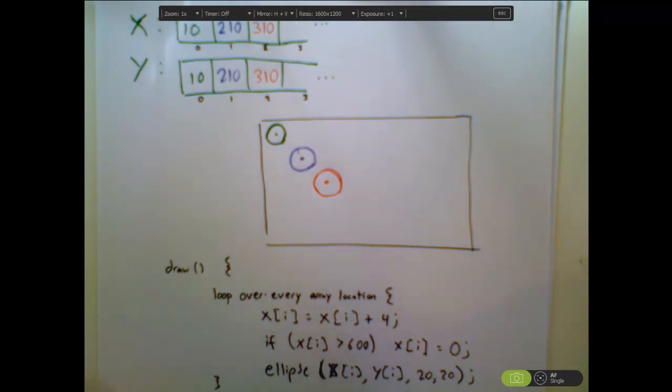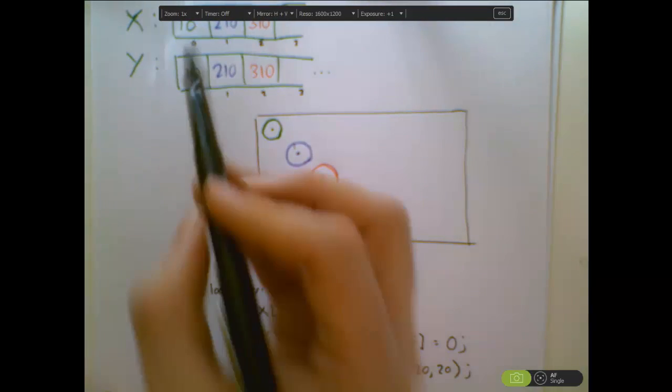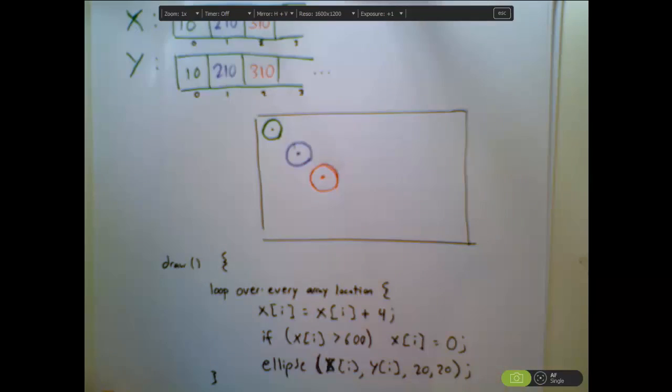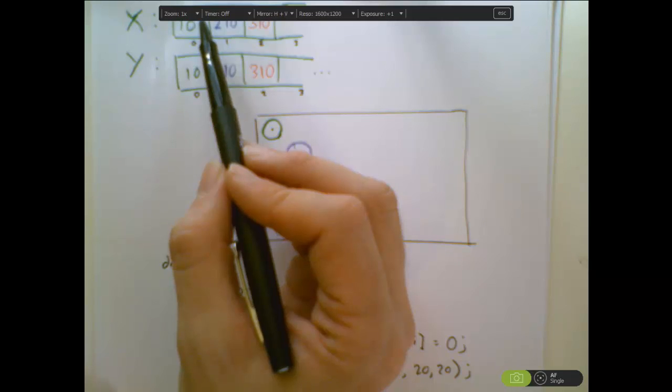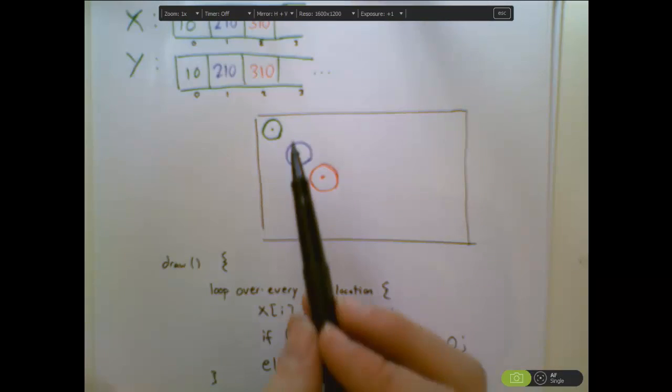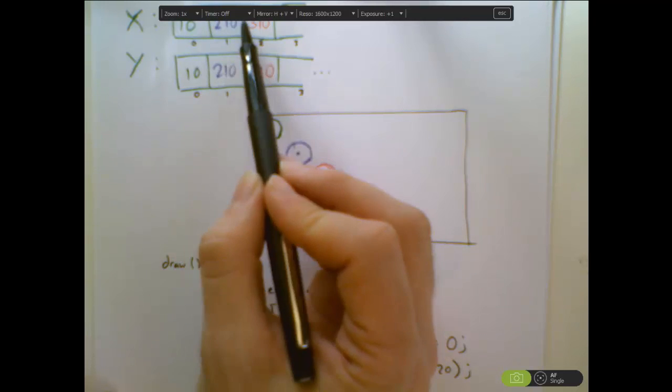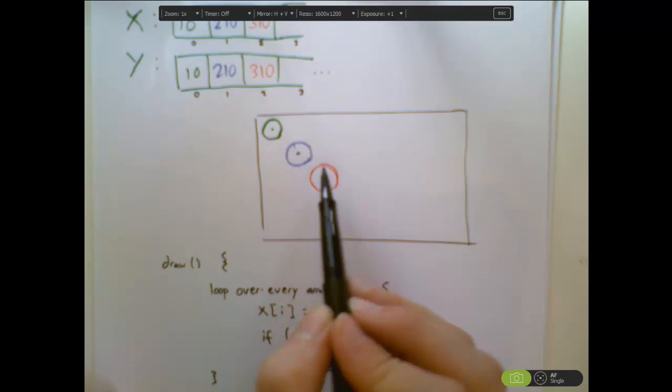We want to do the exact same steps as last time, only this time we need to do each of those steps to every single one of these coordinates. Before, we just had to change the only x coordinate there was by four. Now if we want all the objects to move, I've got to change this by four, and then I've got to change that by four, and then I've got to change that by four to tell each of the balls to move over.